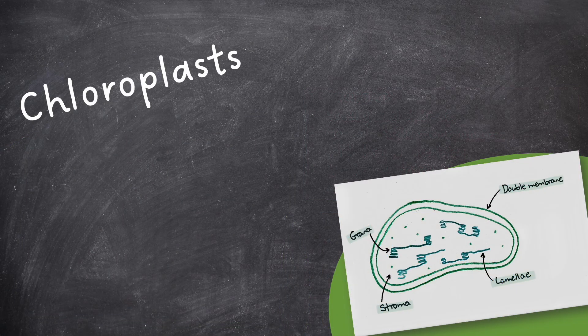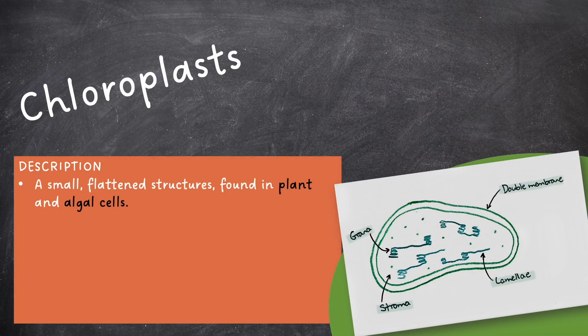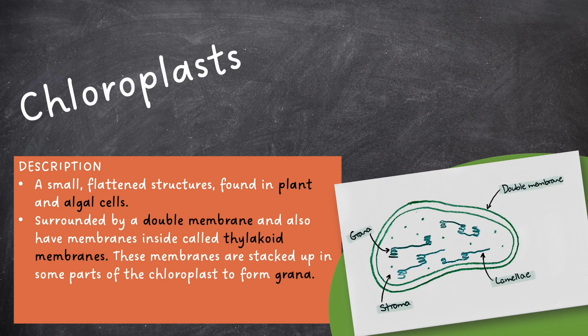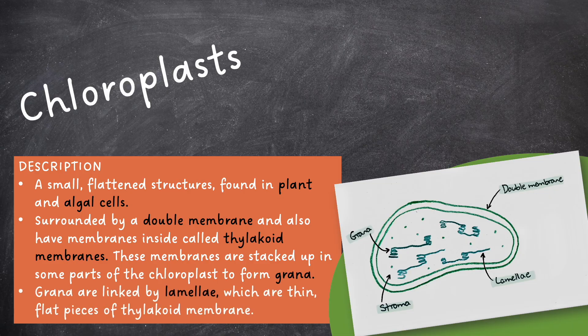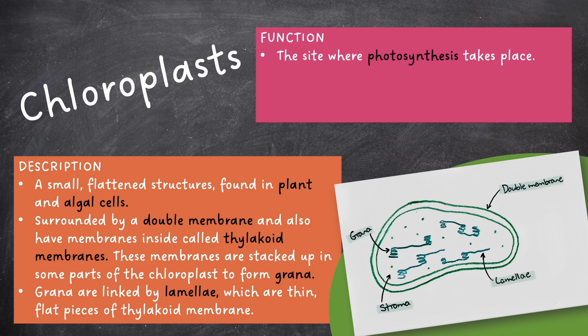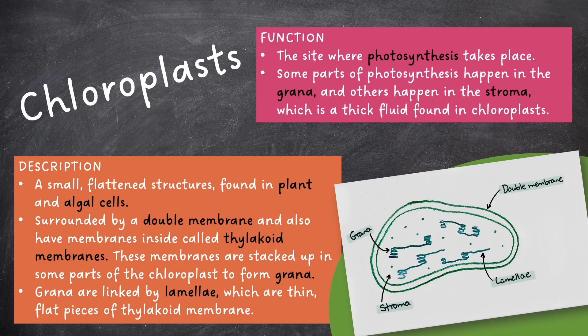Then we have chloroplasts. These are small, flattened structures found in plant and algal cells. They are surrounded by a double membrane and also have membranes inside called thylakoid membranes. These membranes are stacked up in some parts of the chloroplast to form grana. Grana are linked by lamellae, which are thin, flat pieces of thylakoid membrane. Chloroplasts are the sites where photosynthesis takes place. Some parts of photosynthesis happen in the grana and others happen in the stroma, which is a thick fluid found in chloroplasts.